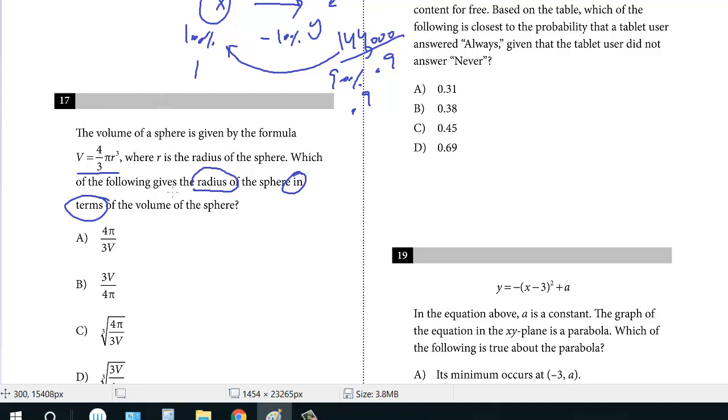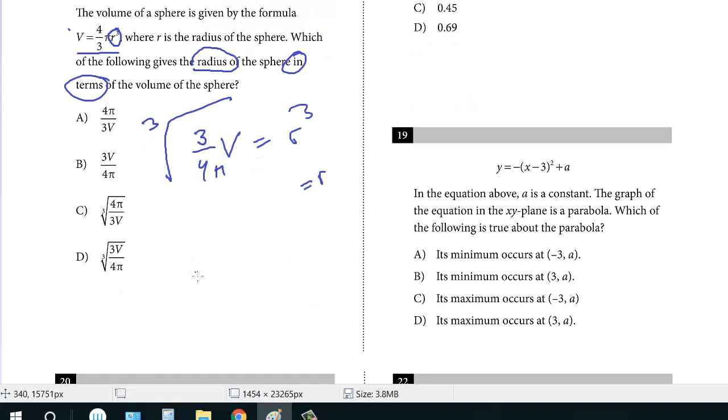So we're isolating R. It's R cubed, but we want just a single R. The first step is multiply by 3/4 to get rid of the 4/3. So that's 3/4V. To get rid of the π, we're going to divide it, so π is on the bottom. This is R cubed. Now the last step is we just want to solve for R, so R is going to be the cube root. The answer is D: the cube root of 3V over 4π.